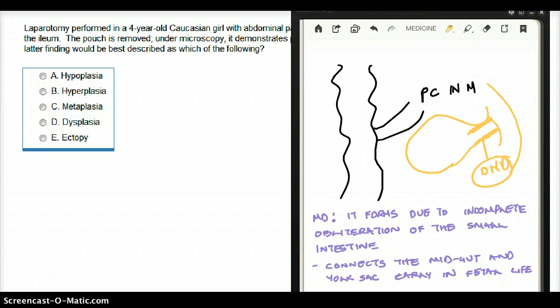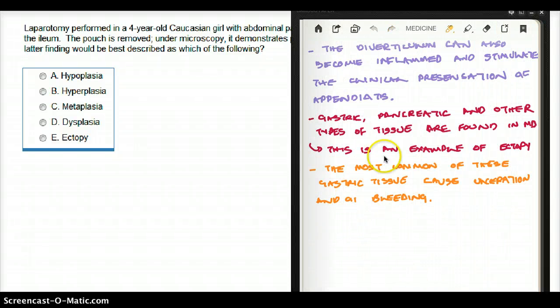It will have gastric tissue, pancreatic tissue, and other tissues present in Meckel's diverticulum because this duct was supposed to completely obliterate. The reason we have pancreatic and gastric tissue is because of its connection to the midgut—the connection of the yolk sac to the midgut.